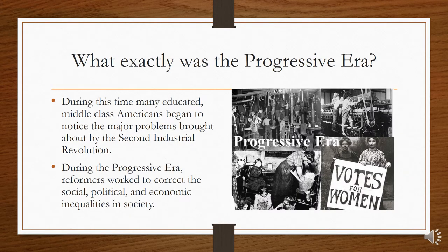What exactly was the Progressive Era? During this time, many educated middle-class Americans began to notice the major problems brought about by the Second Industrial Revolution. During the Progressive Era, reformers worked to correct the social, political, and economic inequalities in society.